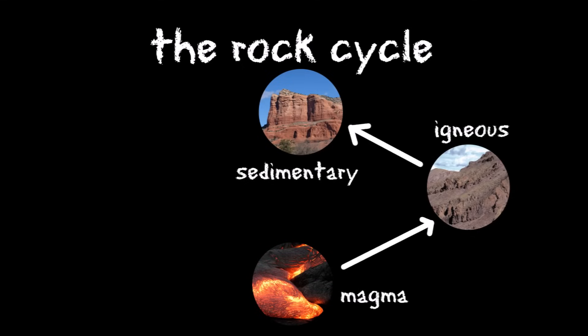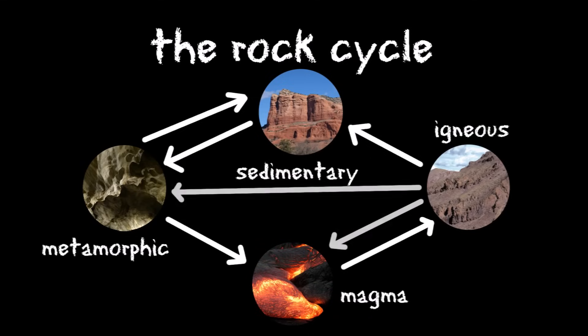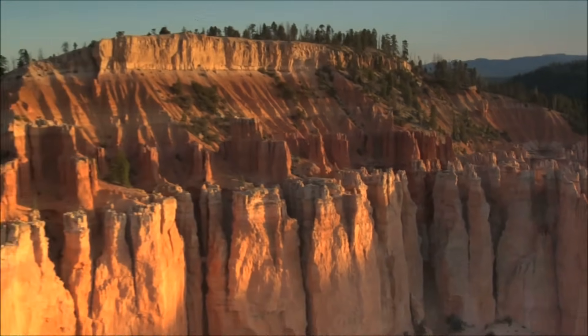Then, some sedimentary rocks are pushed below the surface due to tectonic activity, where they are exposed to heat and pressure, transforming them into metamorphic rocks. If the rocks are buried even deeper, they may melt and form magma, starting the cycle all over again. Of course, sedimentary and metamorphic rocks can be eroded into sediment, and igneous rock can become metamorphic rock or lava. But one way or another, rocks all over the world keep changing from one form to the next.